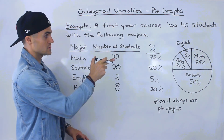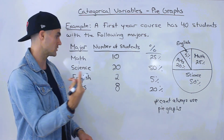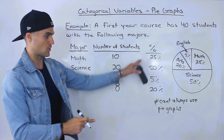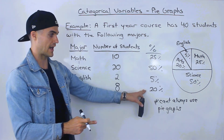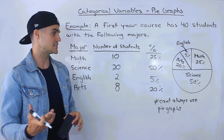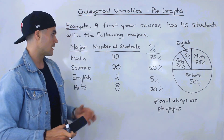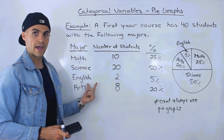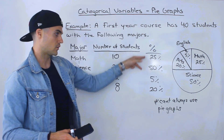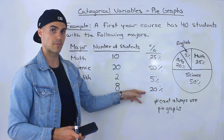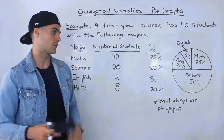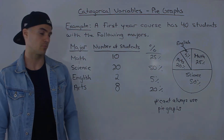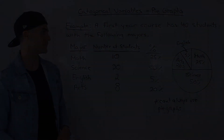We assume each student is in only one major, so the percentages add up to 100%. But with certain data, individuals can fall into multiple categories, and when you add up the percentages they may go over 100%. We'll cover that in a future example when we get there.